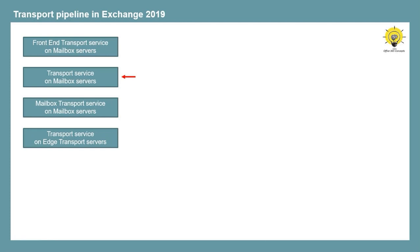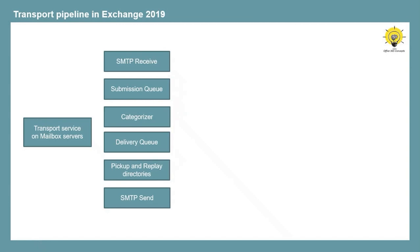Next is Transport Service on Mailbox Servers. This service also runs on the Mailbox Server and is similar to the Hub Transport Server role that existed in Exchange Server 2010. Transport Service handles the internal mail flow within the Exchange organization. It has further components that help manage email routing. The first component is SMTP Receive. When emails are received by the Transport Service, a series of multiple processes is performed to validate that email, including message content inspection, transport rules, anti-spam, and anti-malware inspection.